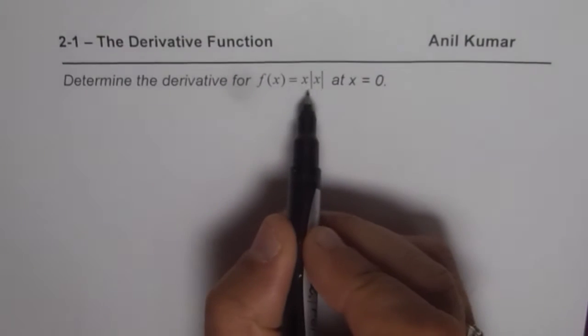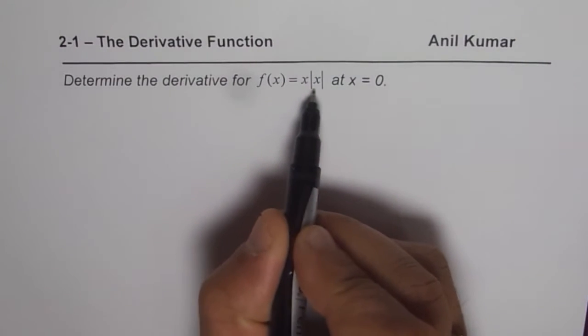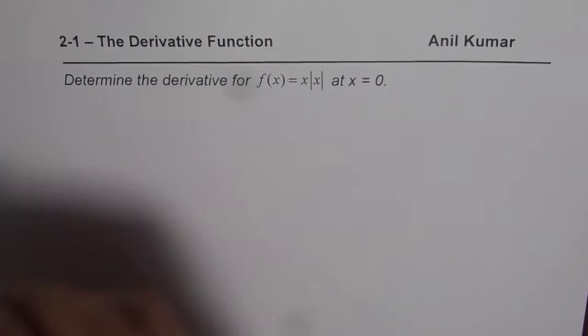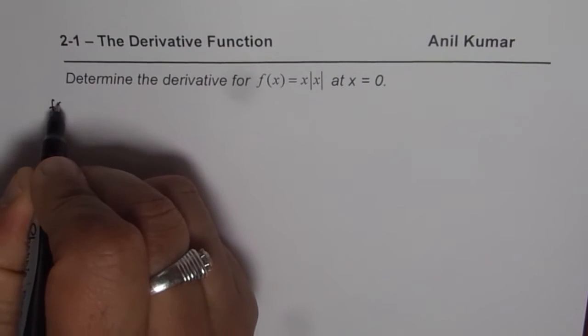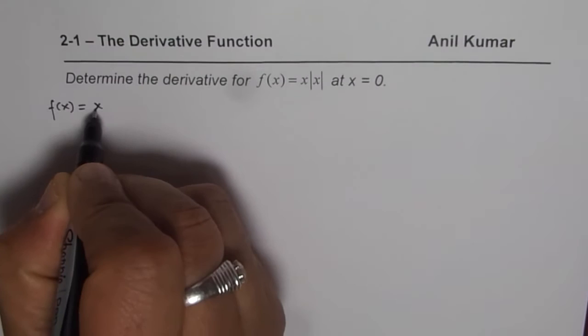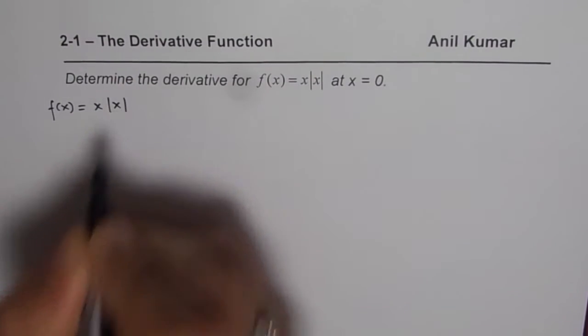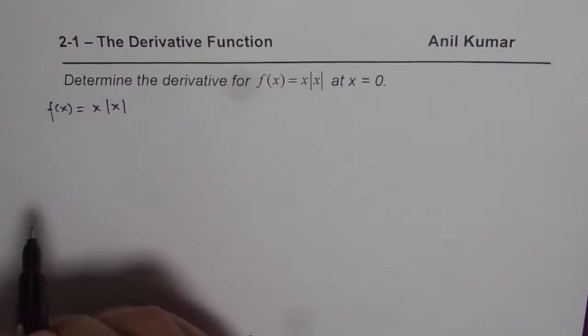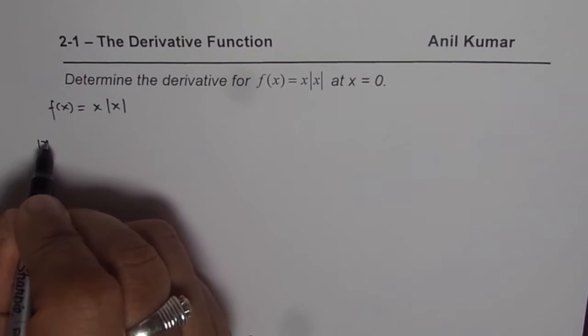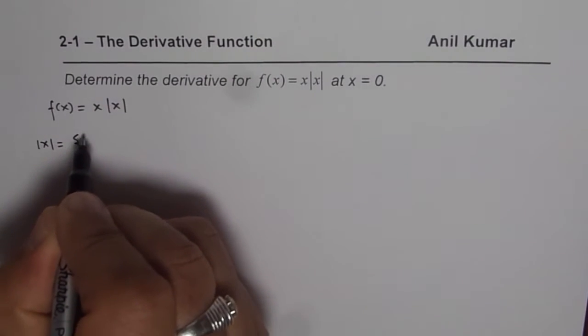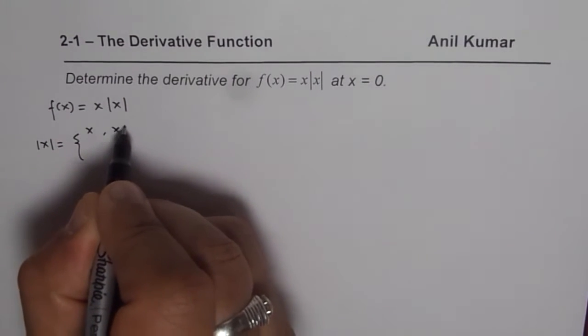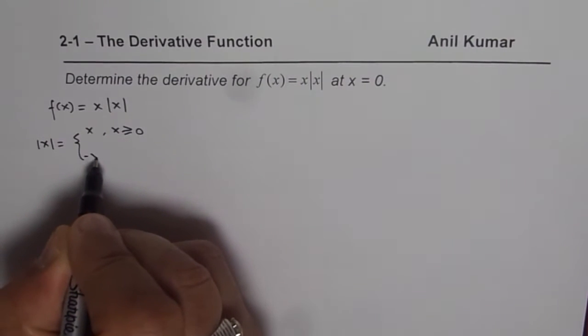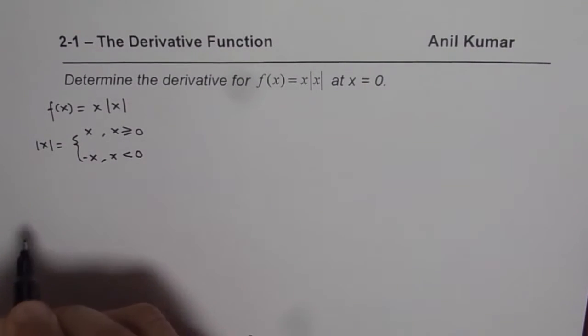Now whenever we are dealing with absolute function, we should treat absolute function as a piecewise function and rewrite the function. That is the very basic which we need to appreciate. So f(x) equals x times the absolute value of x. Now what is absolute x? Absolute value of x is equal to x if x is greater than or equal to 0, and minus x if x is less than 0.